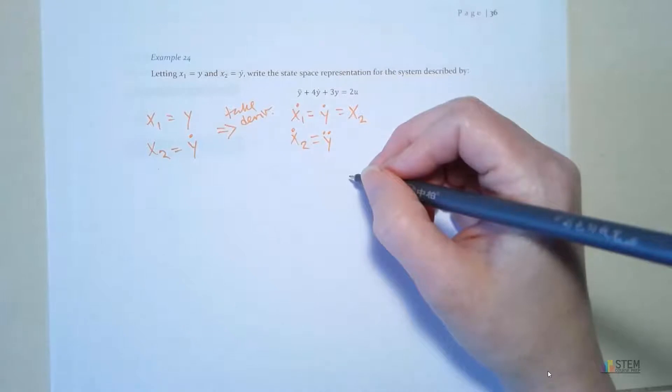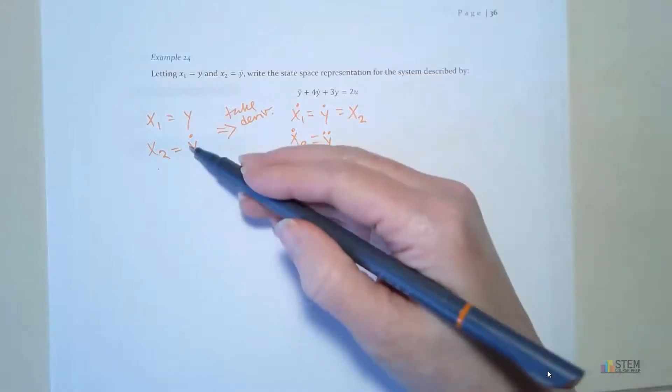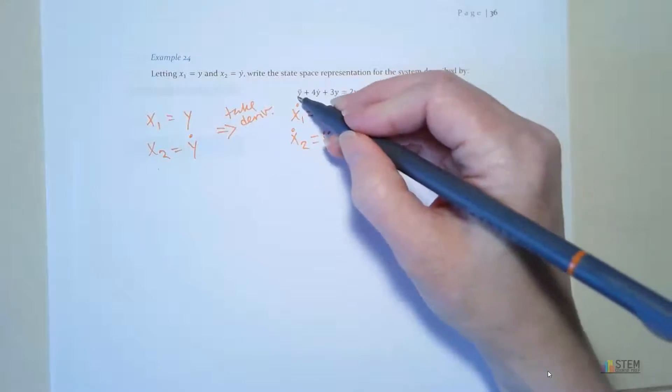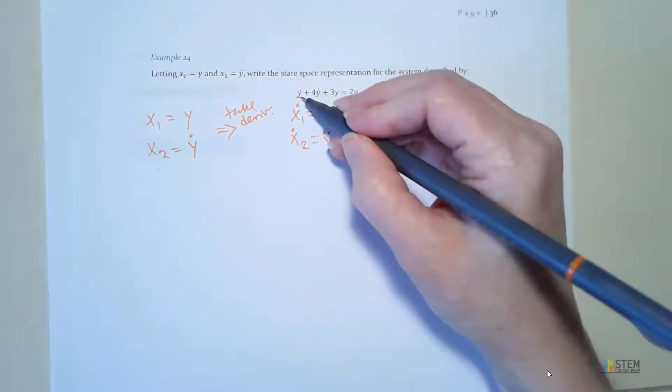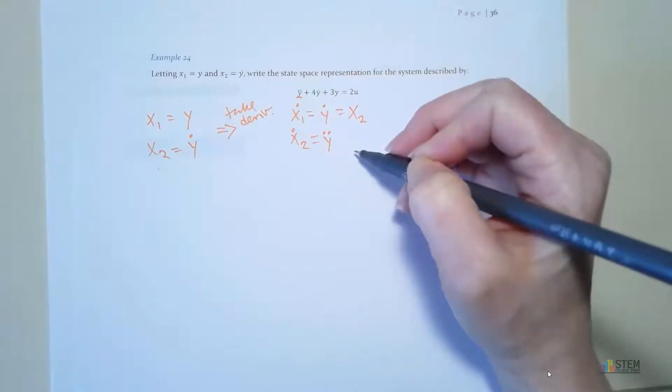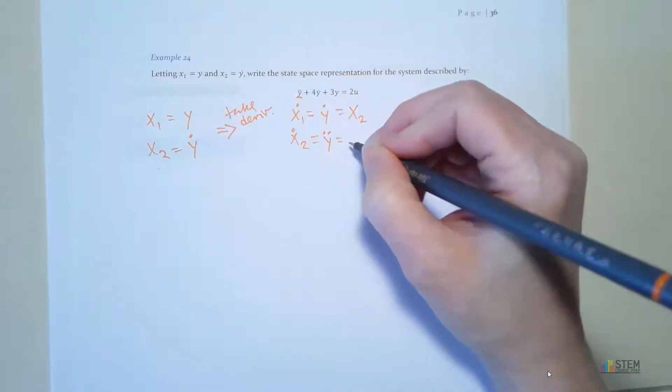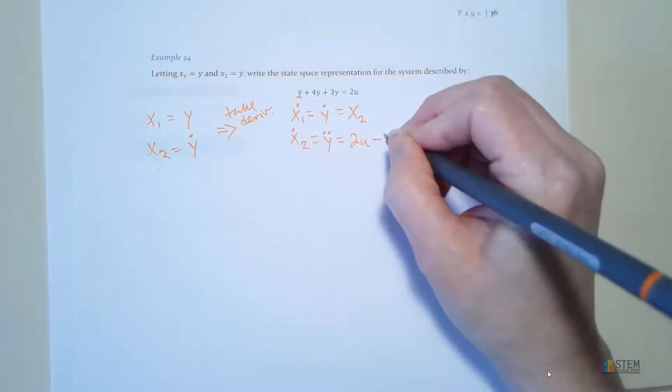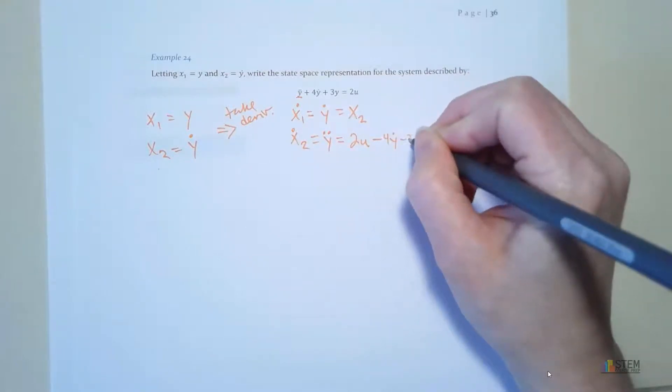So x2 dot is going to be y double dot. And what's y double dot? Well, we don't have anything over here, but we've got this equation. Notice y double dot is right here. We can solve this equation for y double dot. That's what we'll use down here. So if you solve that, you get 2 times u minus 4y dot minus 3y.